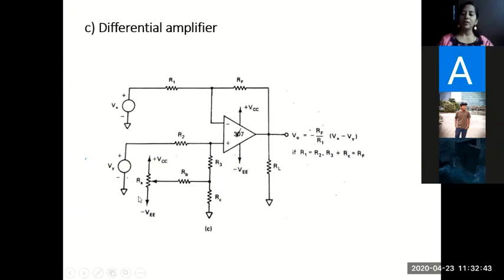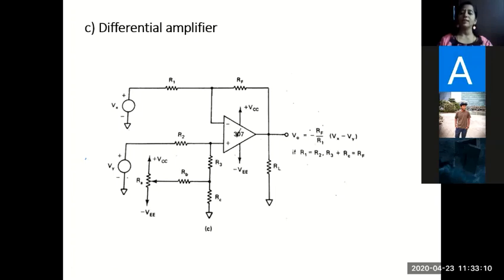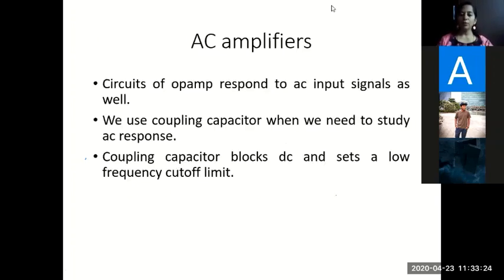The same three amplifier types — inverting, non-inverting, and difference — are shown with additional circuitry to make the output offset voltage zero, for op-amps that do not have the offset null arrangement. If the offset null arrangement is given by the manufacturer, that is the best and easiest way; otherwise you connect all this additional circuitry. All of this is needed only when you require very high precision and accuracy.